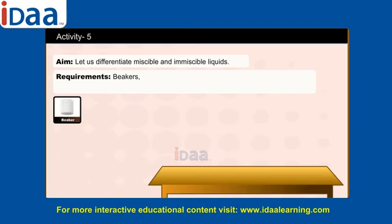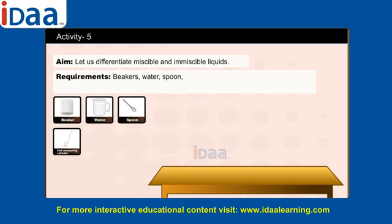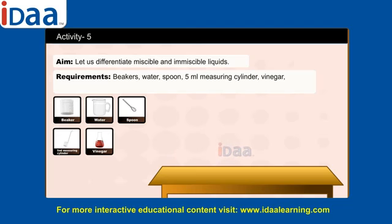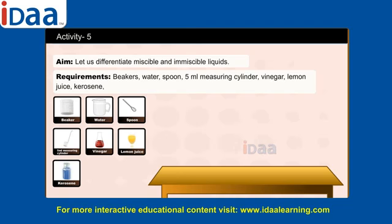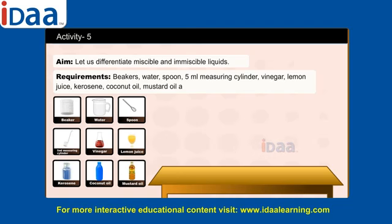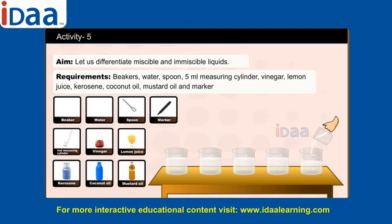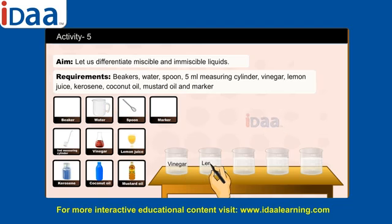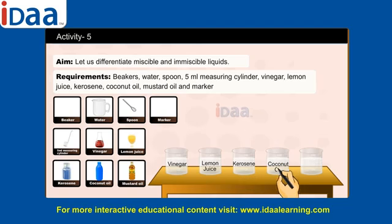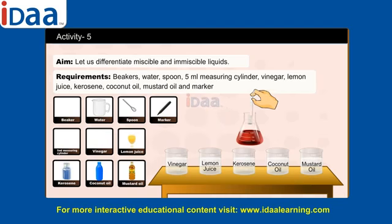Activity 5 — Aim: Let us differentiate miscible and immiscible liquids. Requirements: beakers, water, spoon, 5 ml measuring cylinder, vinegar, lemon juice, kerosene, coconut oil, mustard oil, and a marker. Take 5 beakers of 100 ml each. Fill three-fourths of the beakers with water. Mark the beakers as vinegar, lemon juice, kerosene, coconut oil, and mustard oil respectively. Add 5 ml of each liquid into its corresponding beaker.